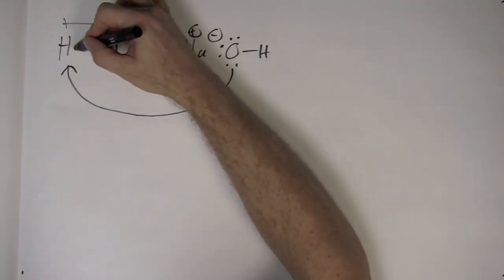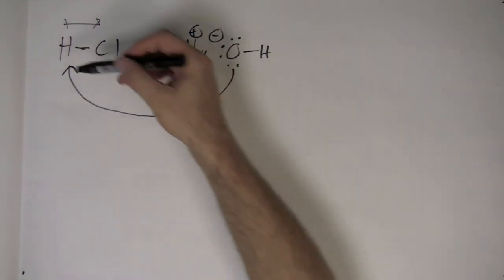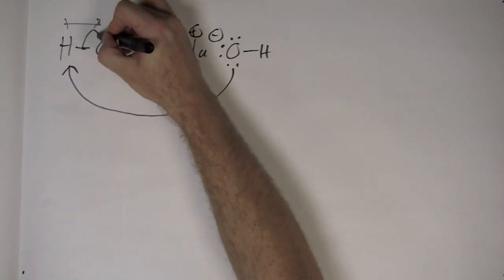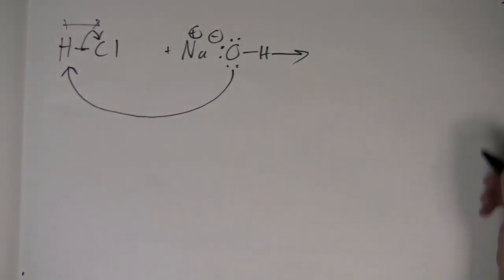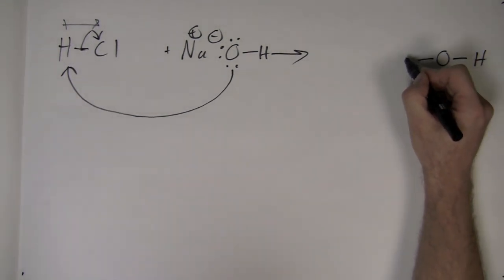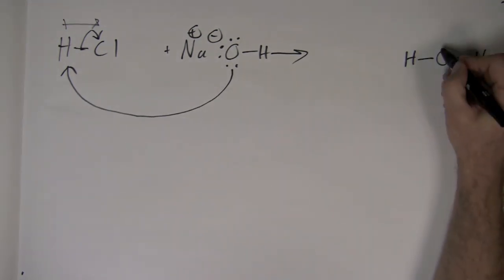As electrons go in, electrons between the bond of hydrogen and chlorine must therefore move out. When we write the products we only show the movement of electrons. We do not show the movement of atoms using arrows.